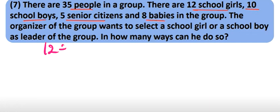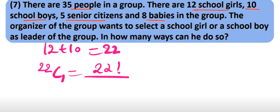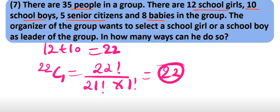There are 12 school girls and 10 school boys, which means 22 eligible people. We have to select one person, so 22 factorial divided by 22 minus 1, which is 21 factorial, multiplied by 1 factorial. So the answer is 22.